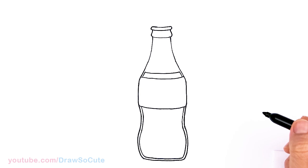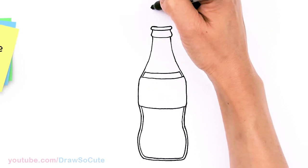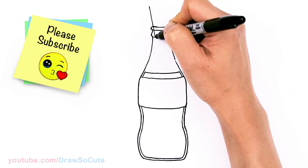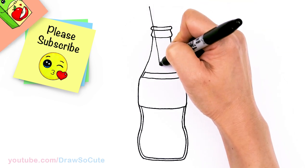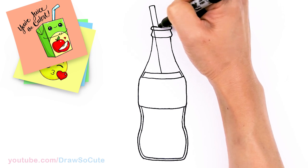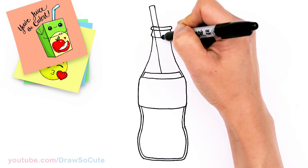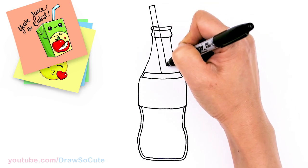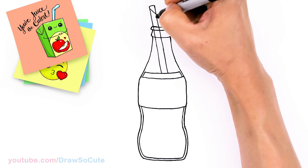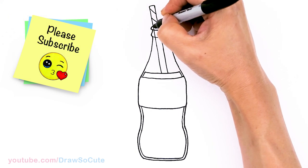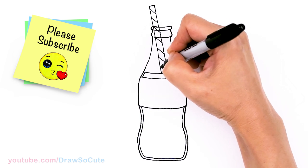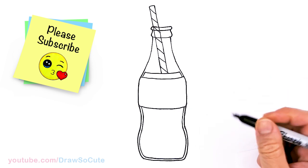And so then let's come in here and we're going to draw a straw. I'm going to come about right here and draw a straw going through. Coming all the way down. And hitting it right there where the liquid starts. Come across. Thicken up our straw. There. And we can come in here with some details on this straw. Give it some stripes if you like. There. Okay.